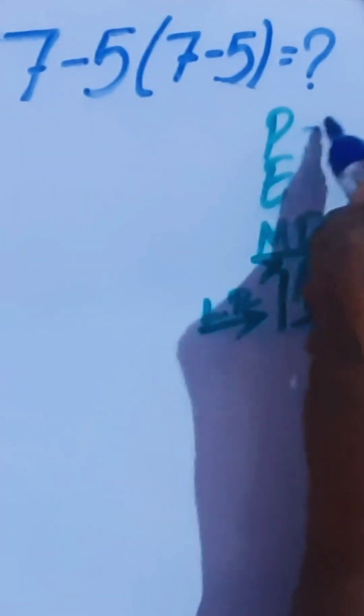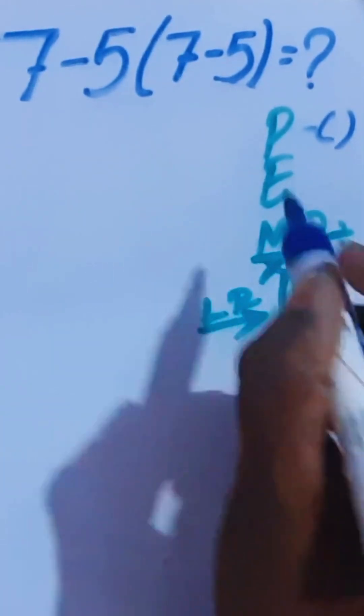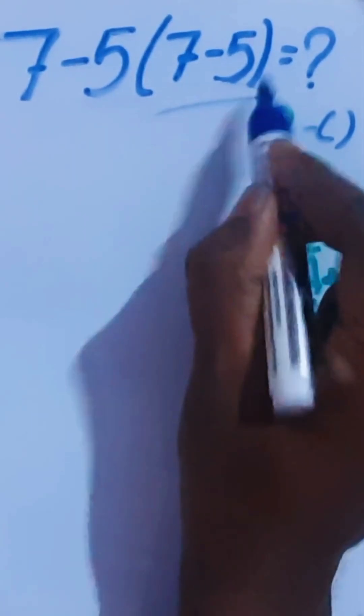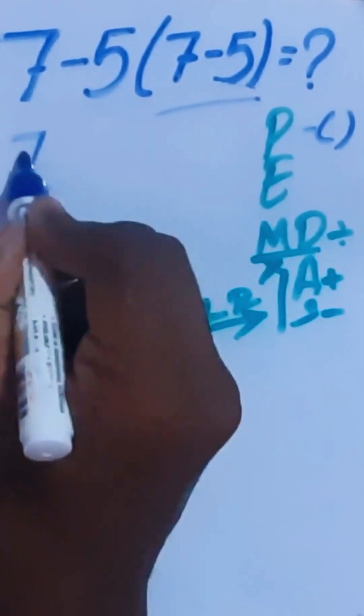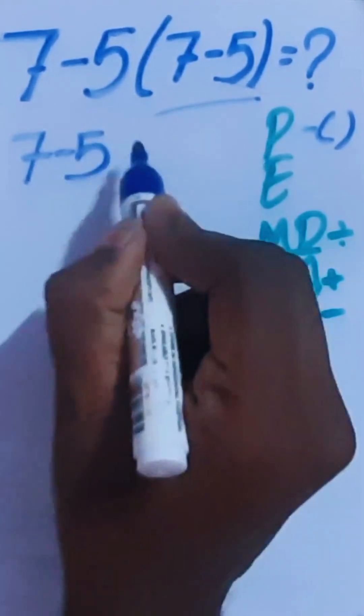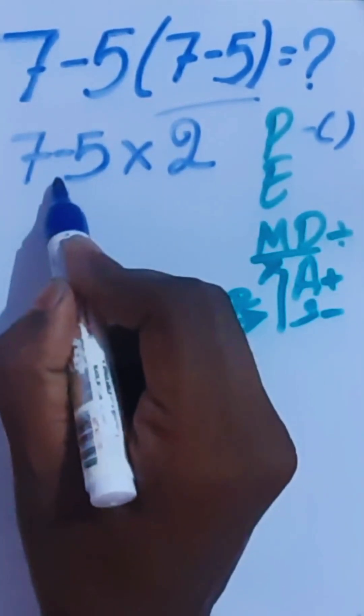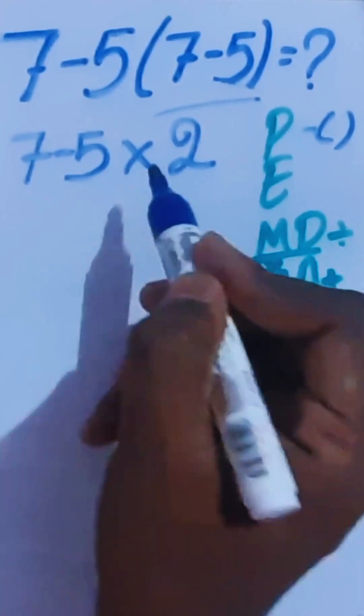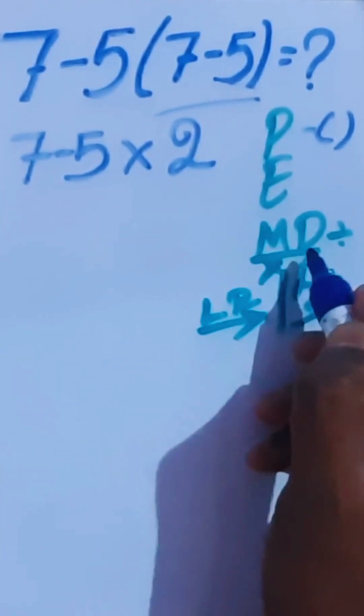Here, this is a bracket, so bracket is higher priority than all others. We have to do this first: 7 minus 5 equals 2. Now we have subtraction and multiplication. Multiplication is higher priority, so we have to do this multiplication first.